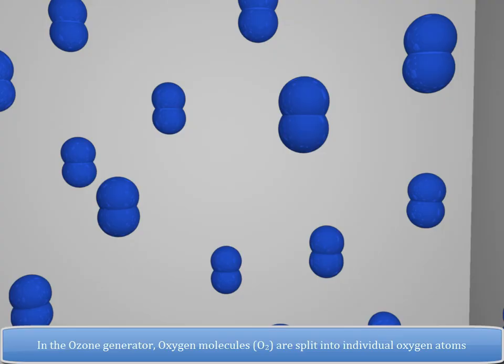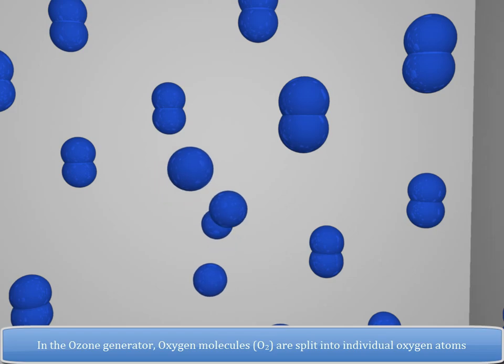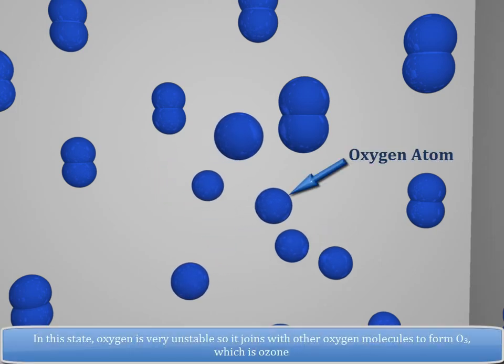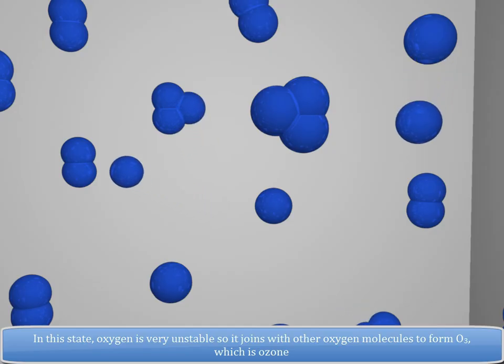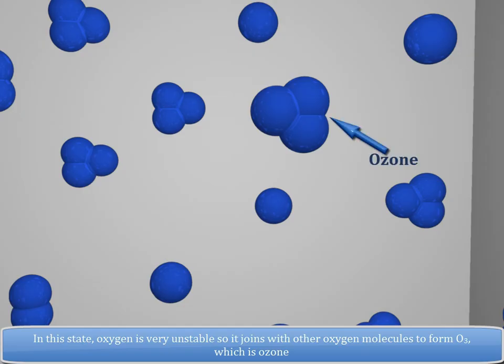In the ozone generator, oxygen molecules are split into individual oxygen atoms. In this state, oxygen is very unstable, so it joins with other oxygen molecules to form O3, which is ozone.